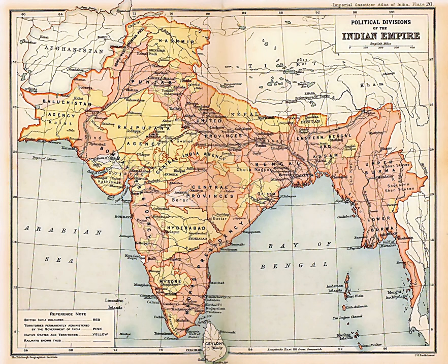Secretary of State for India Montagu and Viceroy Lord Chelmsford presented a report in July 1918 after a long fact-finding trip through India. The Government of India Act of 1919, also known as the Montagu-Chelmsford reforms, was passed in December 1919. The new act enlarged both the provincial and imperial legislative councils and repealed the Government of India's recourse to the 'official majority' in unfavourable votes. Although departments like Defence, Foreign Affairs, Criminal Law, Communications, and Income Tax were retained by the Viceroy and the Central Government in New Delhi, other departments like Public Health, Education, Land Revenue, and Local Self-Government were transferred to the provinces.